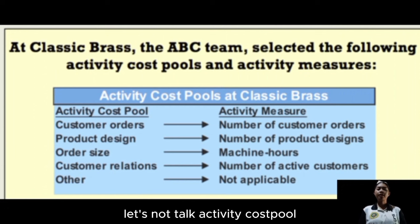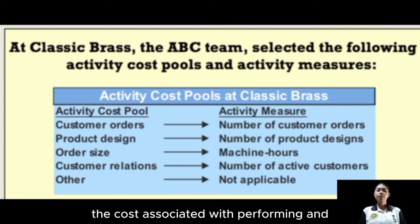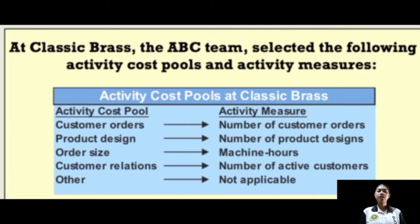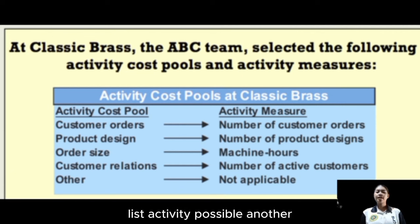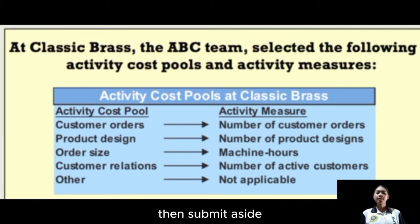An activity cost pool is an aggregate of all the costs associated with performing a particular business task, such as making a particular product. In the activity cost pool list, the pools include customer orders, product design, order size, customer relations, and others. On the activity measure side, the measures correspond to each activity pool.